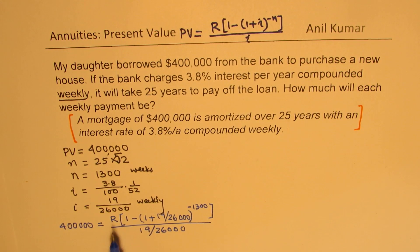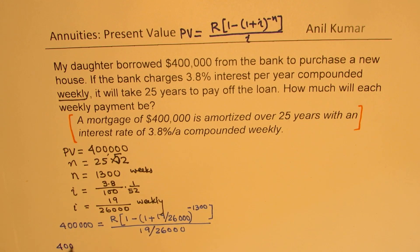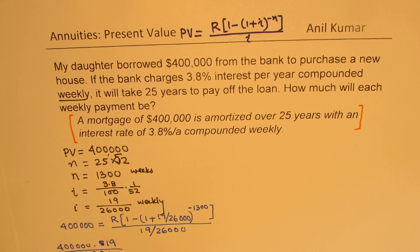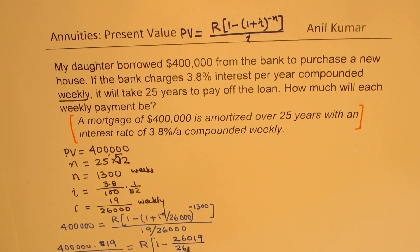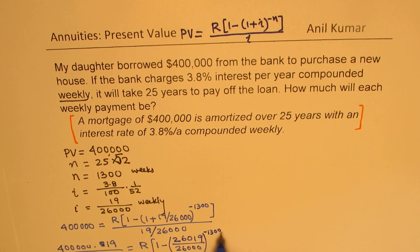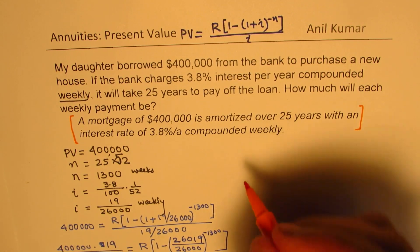The only unknown here is R. Cross-multiplying, we get 400,000 times 19/26,000 on the left side, which equals R times [1 minus (26,019/26,000) to the power of minus 1,300]. So we get 3,800/13 equals R times that bracket.